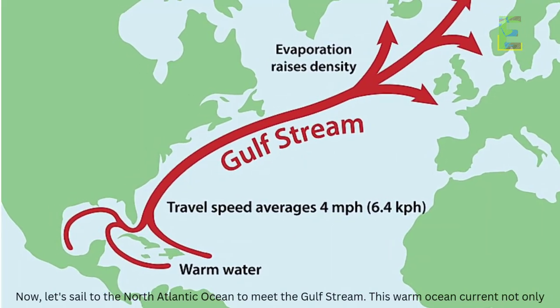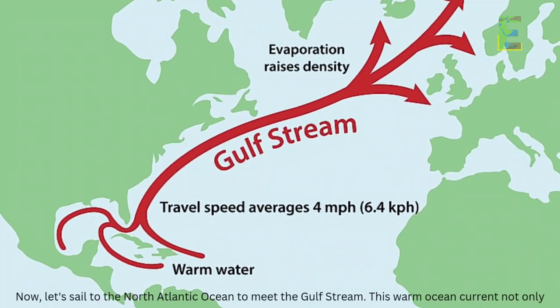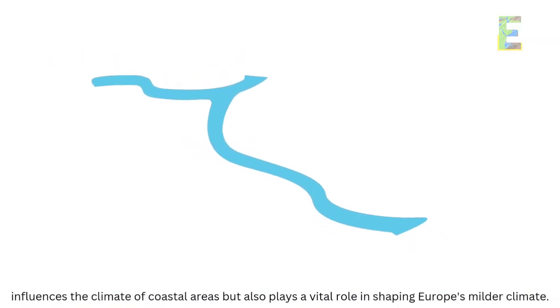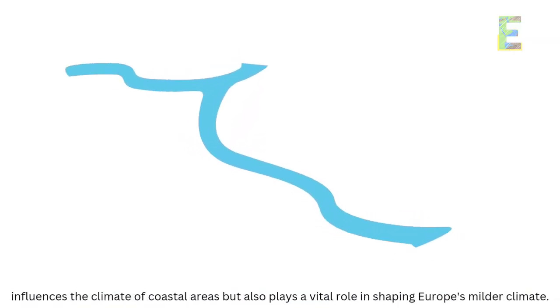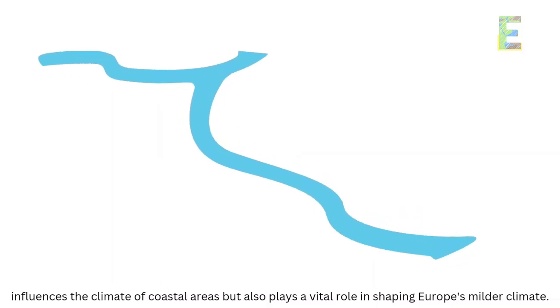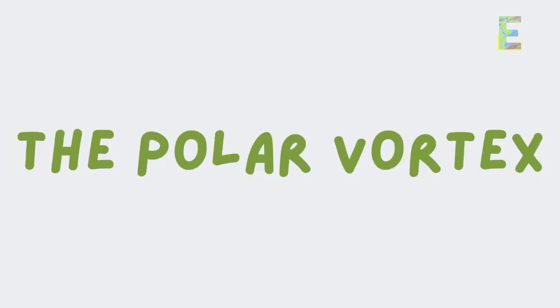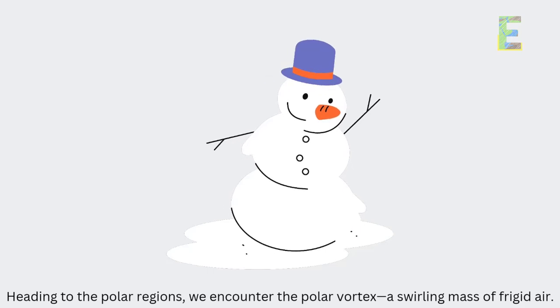The Gulf Stream — let's sail to the North Atlantic Ocean to meet the Gulf Stream. This warm ocean current not only influences the climate of coastal areas but also plays a vital role in shaping Europe's milder climate.